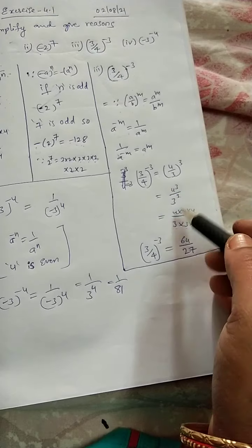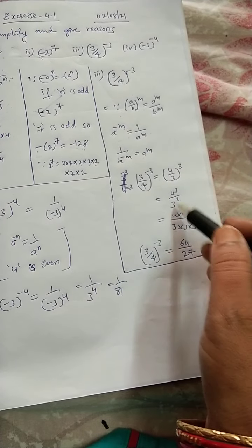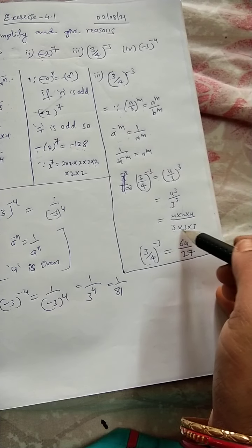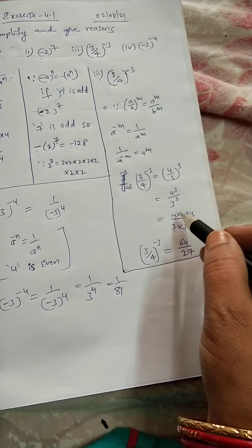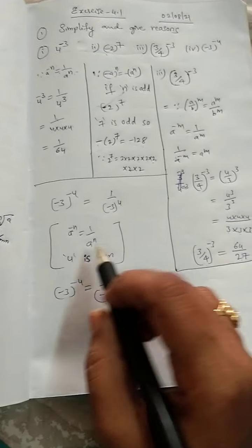Now, 4, we can multiply 3 times 4 and 3 power 3 is there means 3 times we can multiply 3. So, if you multiply, you will get 64 by 27. Next,